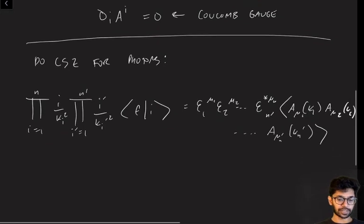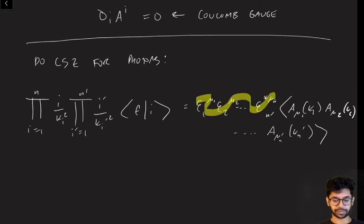Okay, so this is the same sort of thing that we're really familiar with from LSZ for scalar fields. The only difference is that you have these extra polarization vectors floating around.